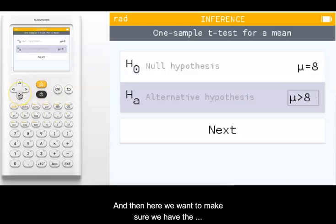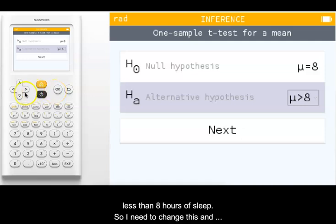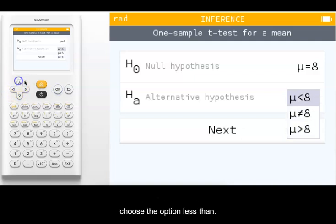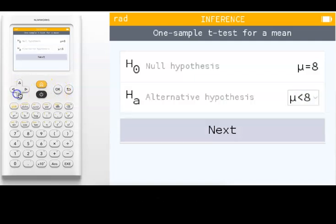Here we want to make sure we have the correct alternative chosen. I want to know if the mean is less than 8 hours of sleep, so I need to change this and choose the option less than. I'll go to next.